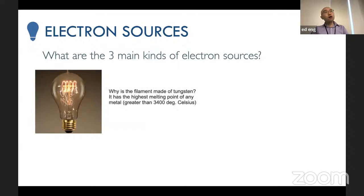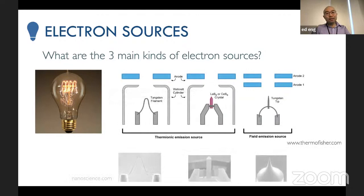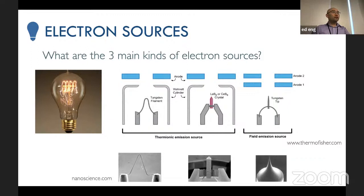Our electron sources — our 'light bulbs' — tend to be made of tungsten, which can be heated to over 3,000 degrees Celsius. Other source types include lanthanum hexaboride (LaB6) crystals and field emission guns (FEGs) with a tungsten tip. A tungsten filament works like a light bulb — heat it up and it emits electrons. Below are pictures of a tungsten filament, a LaB6 filament, and a field emission gun tip.